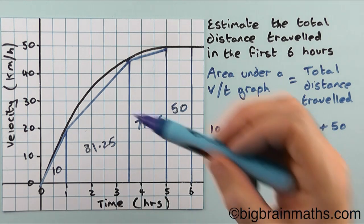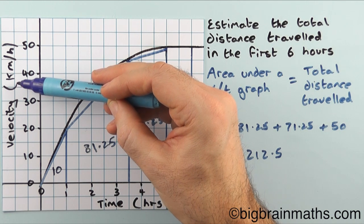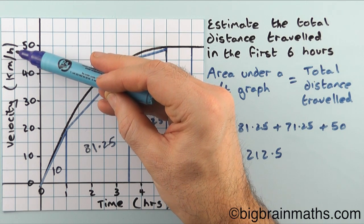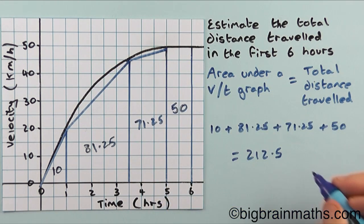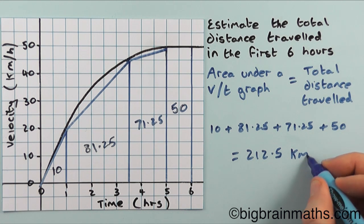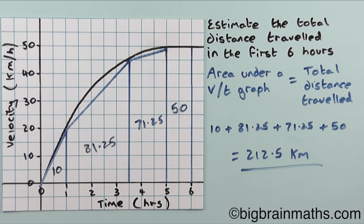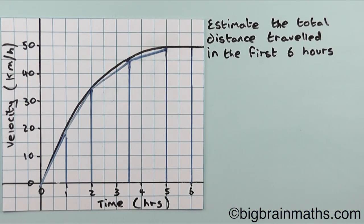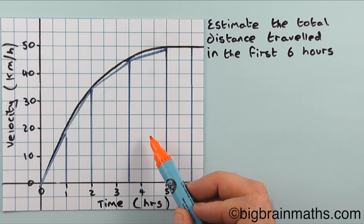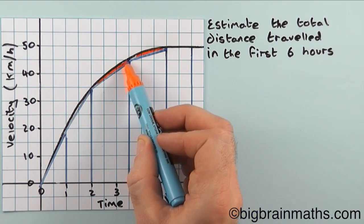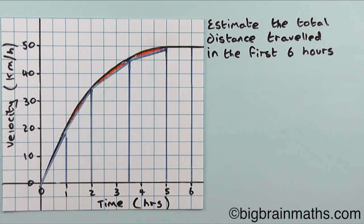We need to add units to our answer. To find the units for total distance travelled, look at the units for velocity — velocity is measured in kilometres per hour, so the distance part of those units is kilometres, meaning the distance we've worked out is also measured in kilometres. That is the final answer. Note that if we split the area into three trapeziums instead of two, the gap between the trapeziums and the curve becomes much smaller, giving an even better estimate. The more trapeziums you split your graph into, the better your estimate will be.